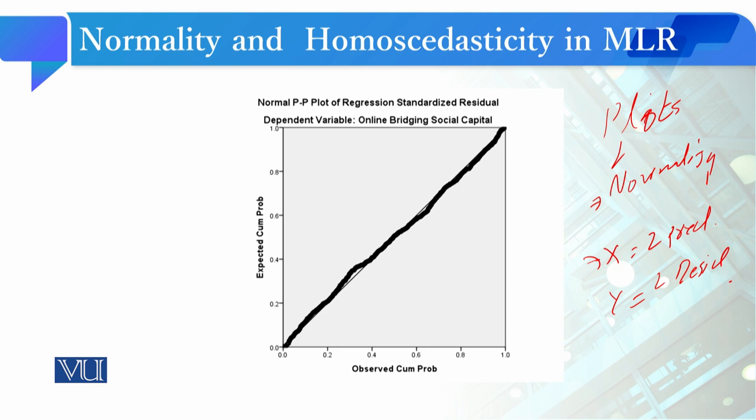This is the normal PP plot of regression standardized residuals. It makes a linear relationship between observed residuals and expected residuals, and this is the outcome of this analysis that we asked SPSS to produce.